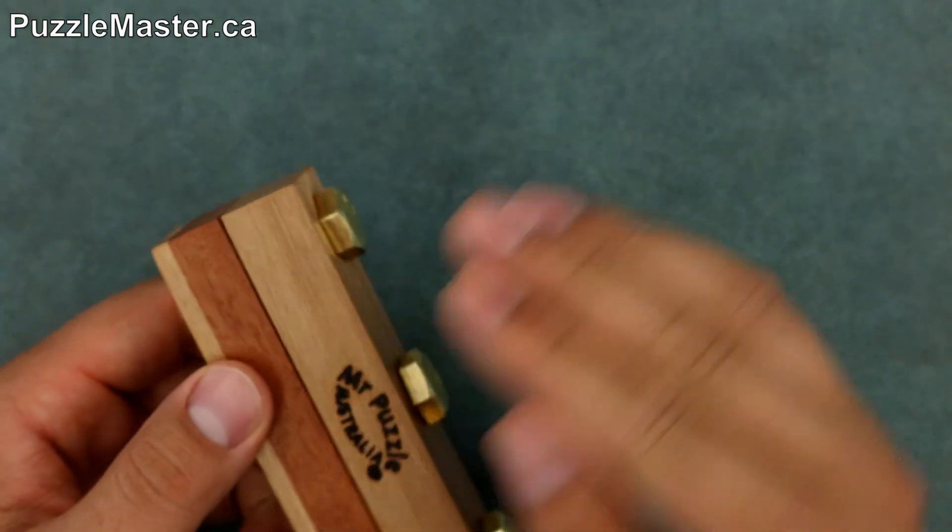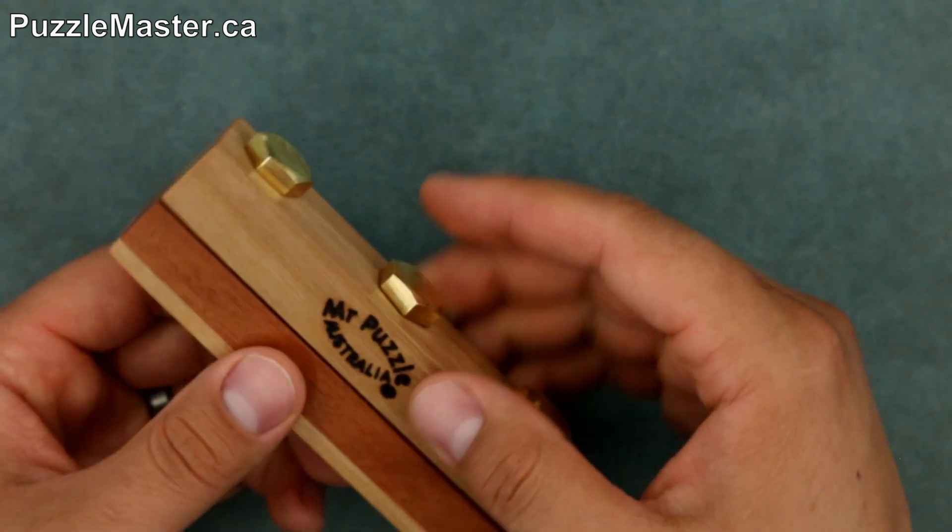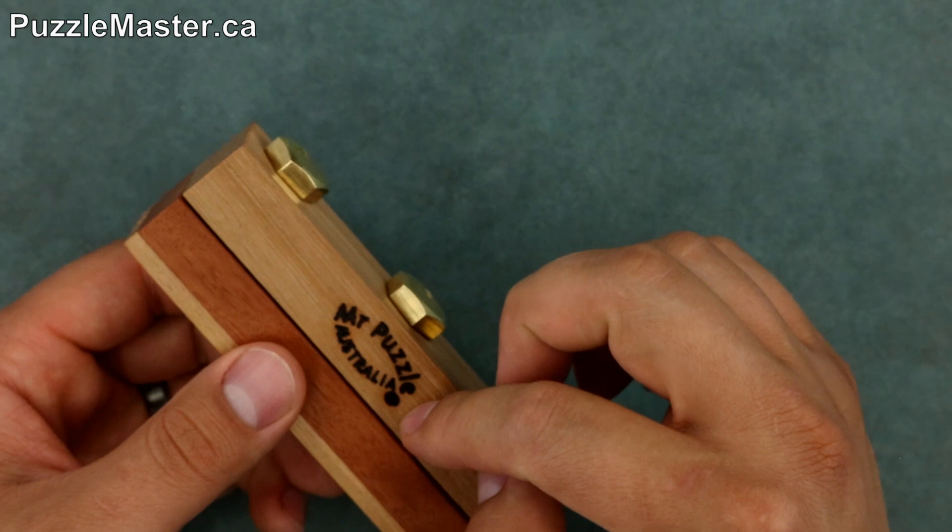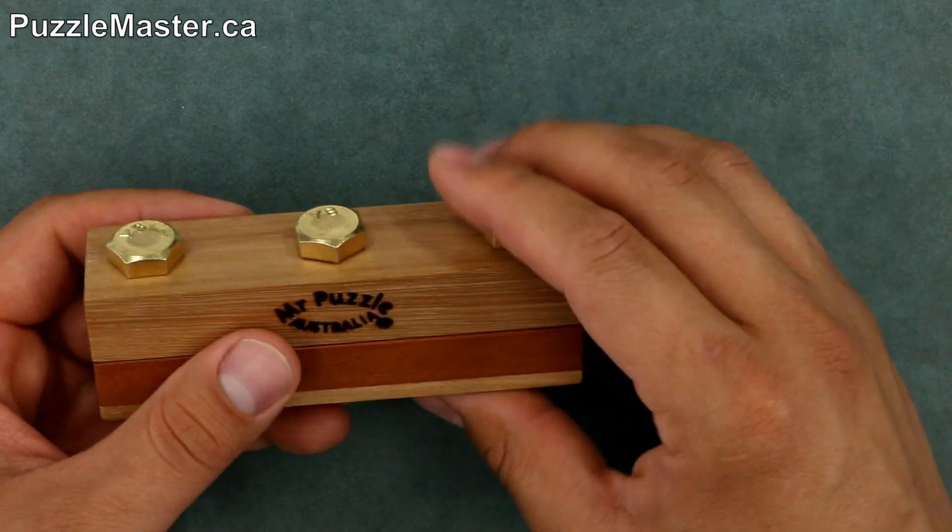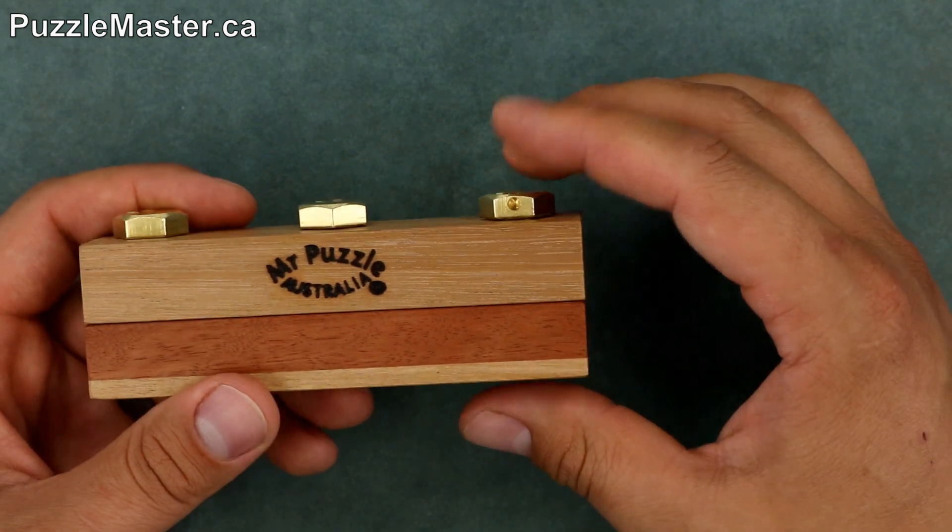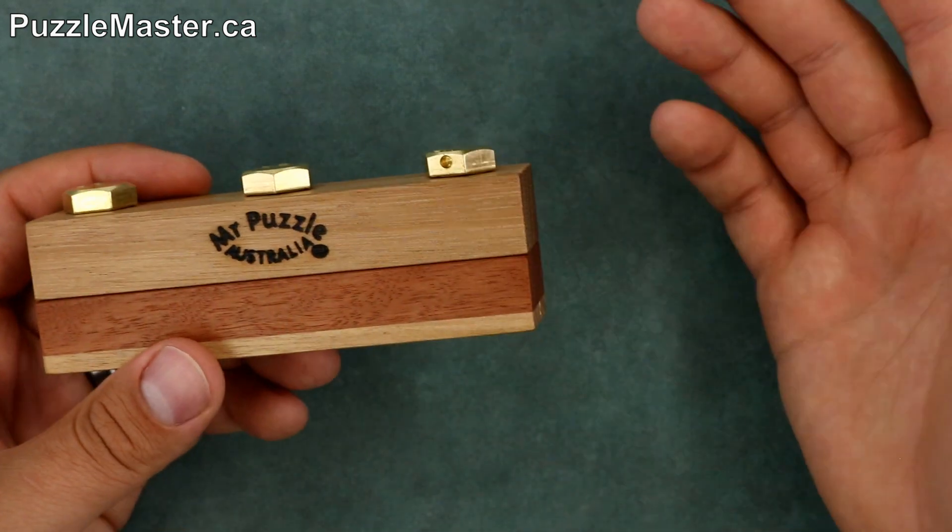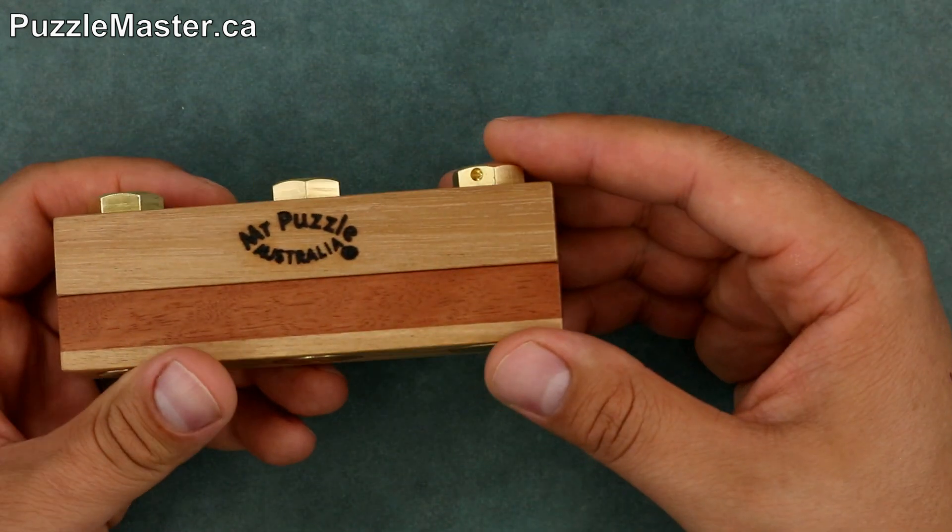Apparently the solution is that the split here opens up and there's two compartments inside. What you've got to do is get the three bolts out of the top. The way it's been explained is that two of the bolts come out, they're tricky but not extremely hard.